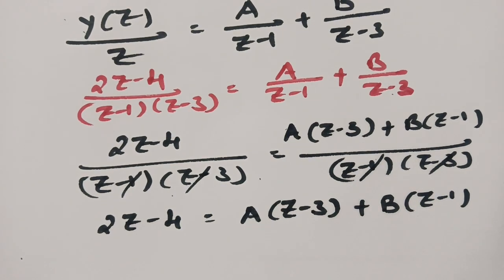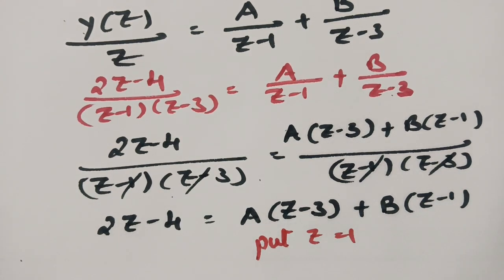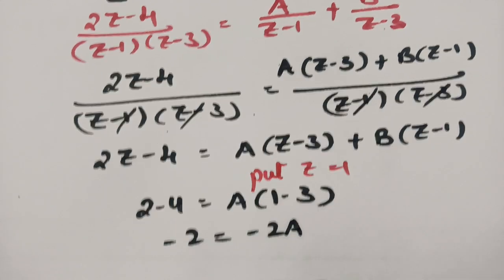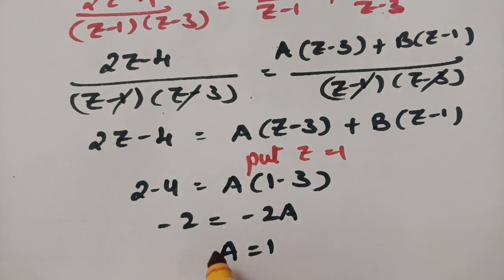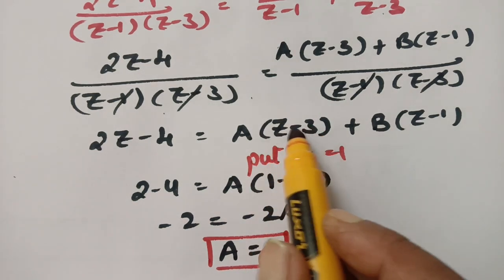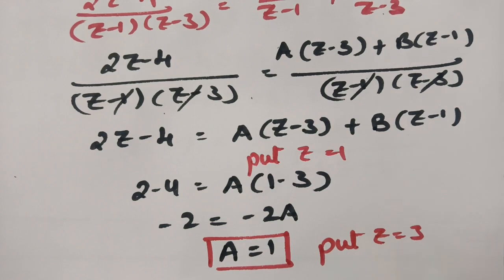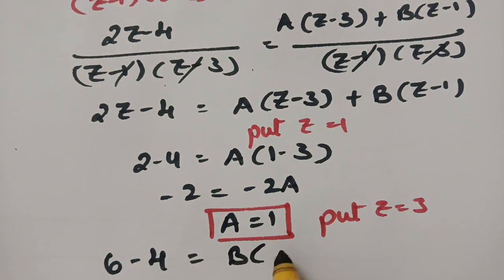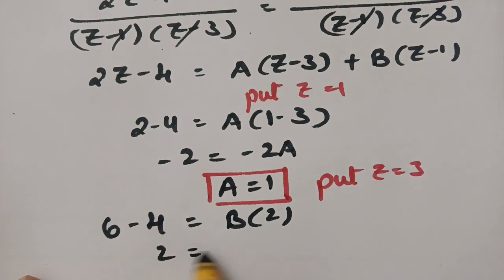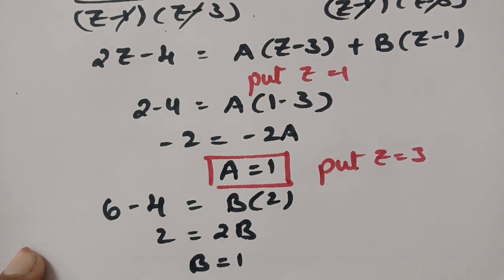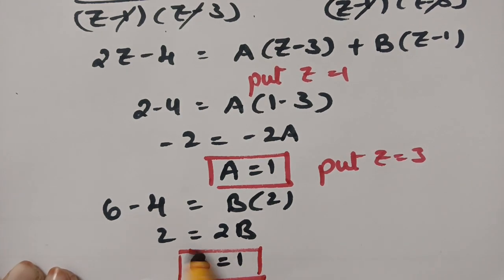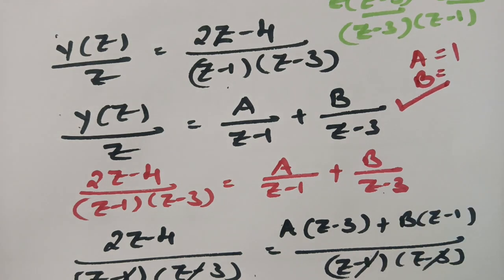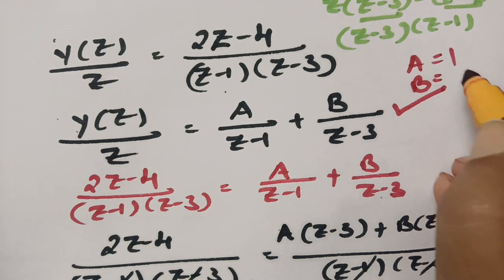To find A, put Z equals 1: 2 minus 4 equals A times (1 minus 3), so minus 2 equals minus 2A, giving A equals 1. To find B, put Z equals 3: 6 minus 4 equals B times (3 minus 1), so 2 equals 2B, giving B equals 1. After getting A equals 1 and B equals 1, I will substitute these values back.